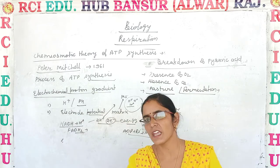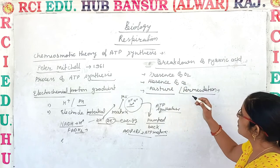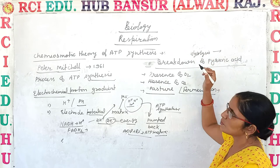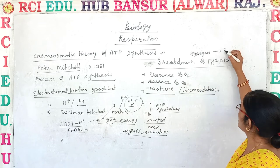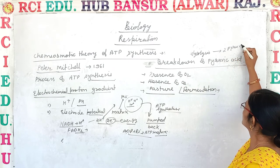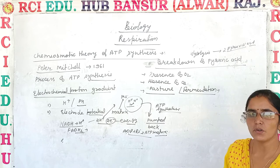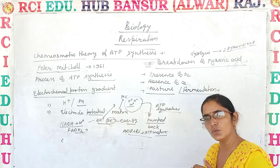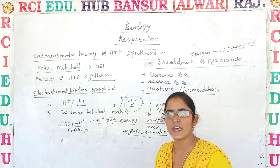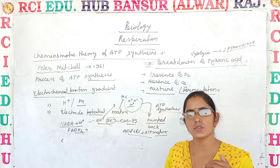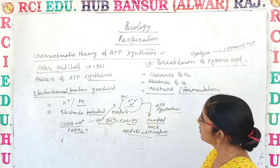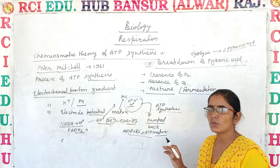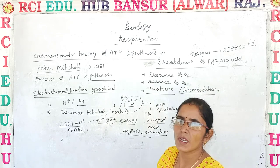Now the next topic is the breakdown of pyruvic acid. During the process of glycolysis, one glucose molecule is oxidized into two molecules of pyruvic acid. Now pyruvic acid has two options. One is that in the presence of oxygen, it enters into the Krebs cycle and produces three molecules of carbon dioxide — meaning one pyruvic acid gives rise to three CO₂. Two molecules of pyruvic acid give six CO₂, meaning one glucose molecule is completely oxidized into carbon dioxide, water, and energy.